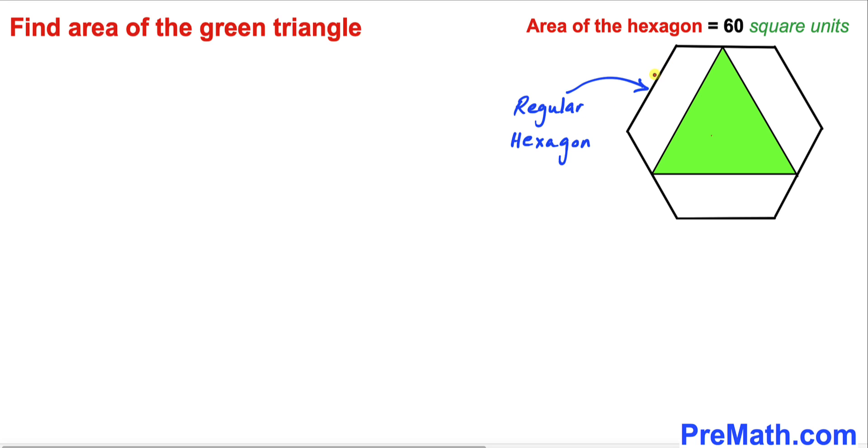This is a regular hexagon since each side is of equal length. Moreover, the vertices of this green triangle are at the midpoint of these sides of the hexagon, so therefore this is an equilateral triangle.